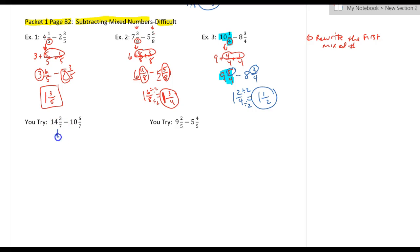So the first U-try, I'm going to rewrite this as 13 plus one, which I'm going to write as seven over seven, plus three over seven. So that becomes 13 and seven plus three is ten-sevenths.